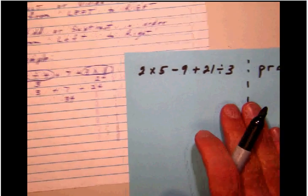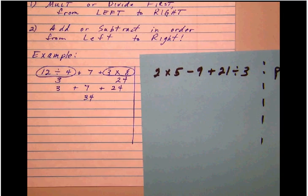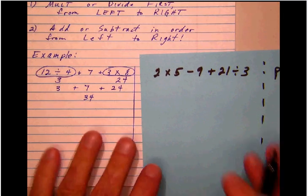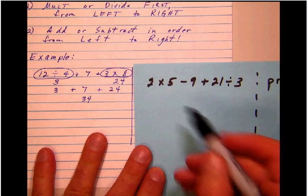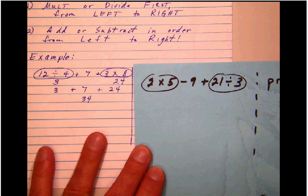Notice here that what we did in the example was first of all go through there and find the divisions and multiplications. In this case, notice that we have a multiplication here first, we have a division over here, so we'll locate those.